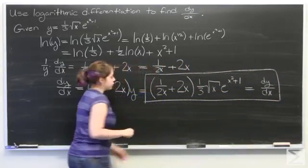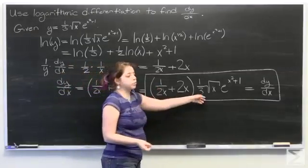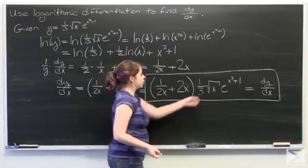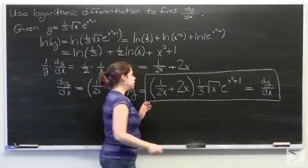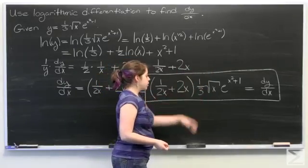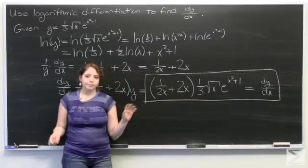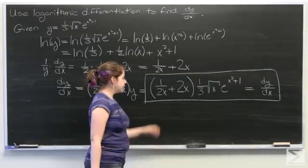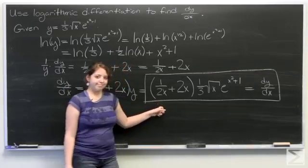Now, you can further multiply this out — for example, one over two x times one third gives one over six x square root of x times e to the x squared plus one — but it's not going to look that much simpler, so you can leave your answer as is.